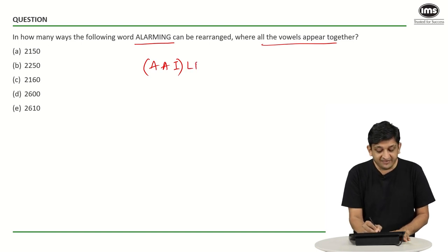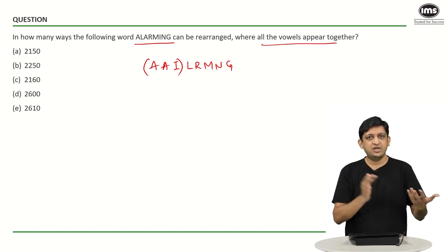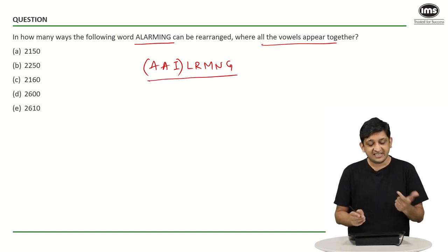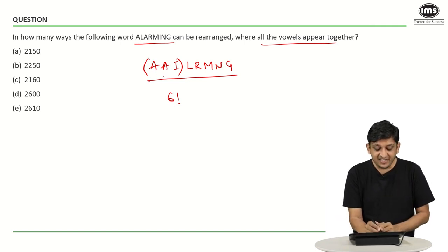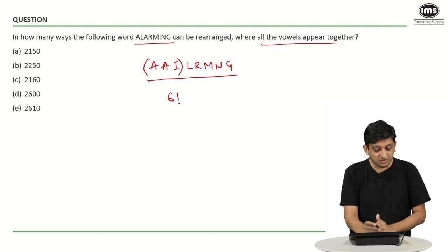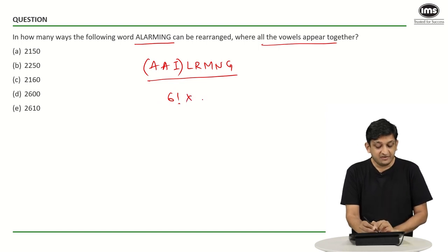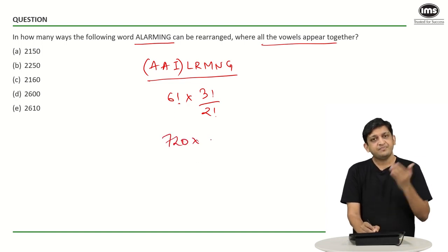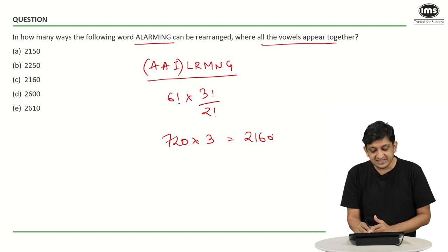So we have to arrange 6 groups among themselves, which can be done in 6 factorial ways. But one of these groups contains A, A and I. So we need to figure out in how many ways these three letters can be arranged among each other, which is 3 factorial divided by 2 factorial. So what we get is 6 factorial, that is 720, multiplied by 3 factorial divided by 2 factorial. 720 into 3 gives us 2160.